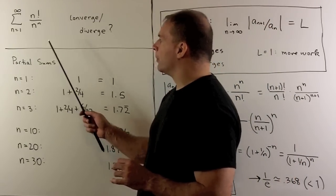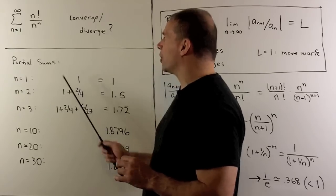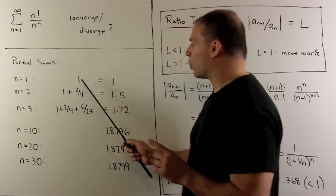For the second partial sum, we're going to take that 1, and then add the next term, which is 2 factorial over 2 squared, or 1 half.